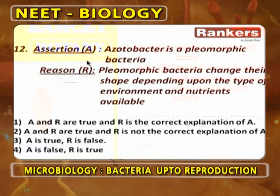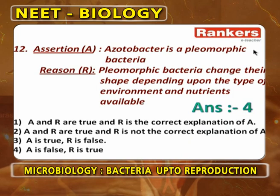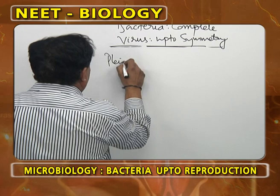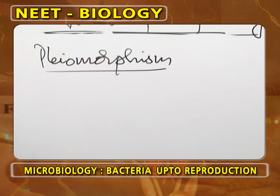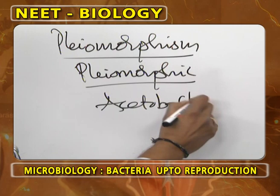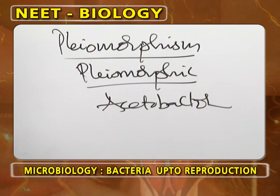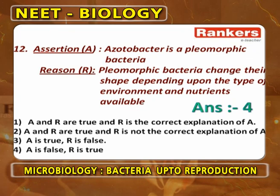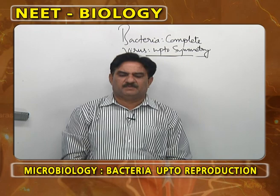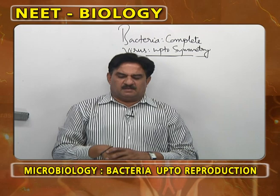Assertion-reasoning question: Acetobacter is a pleomorphic bacterium. Pleomorphism means a bacterium changing its shape according to nutritional requirements and environmental conditions. The pleomorphic bacterium is Agrobacterium, not Acetobacter. So assertion is wrong. Reason: Pleomorphic bacteria change their shape depending upon the type of environment and nutrients available — this is correct. Answer: A is false, R is true.